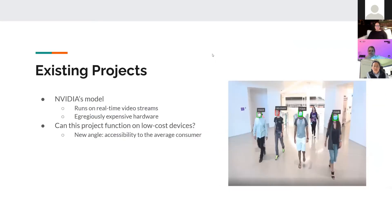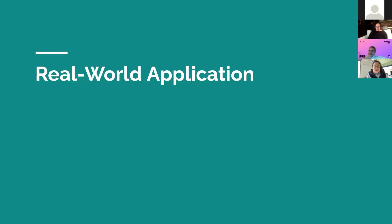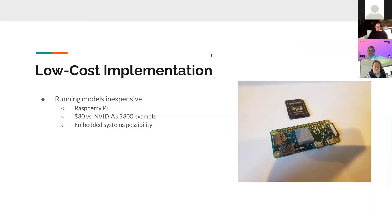There's only one existing project similar to this, built by NVIDIA. The difference is that it runs on real-time video streams but requires egregiously expensive hardware. MISIDO's angle is: can it be accessible to the average consumer? I was actually able to get this project running on a Raspberry Pi — a $30 credit card-sized computer — which is an order of magnitude cheaper than NVIDIA's $300 example. Being so accessible gives way to the idea of embedded systems and a hardware implementation.